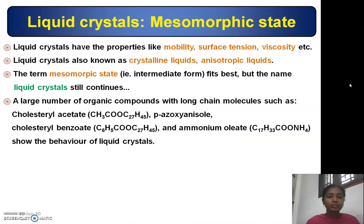Liquid crystals have properties like mobility, surface tension, and viscosity. They are otherwise known as crystalline liquids, anisotropic liquids, and mesomorphic state. Mesomorphic state is nothing but an intermediate form.